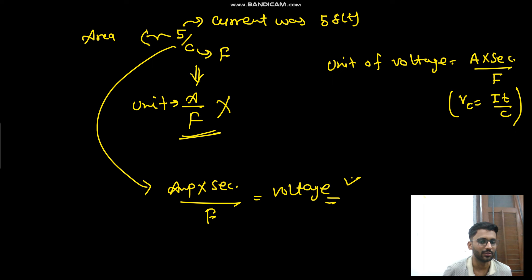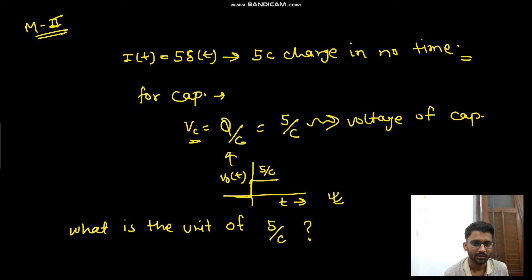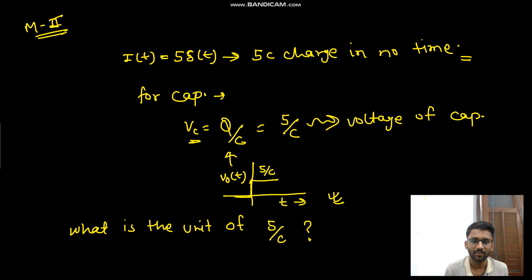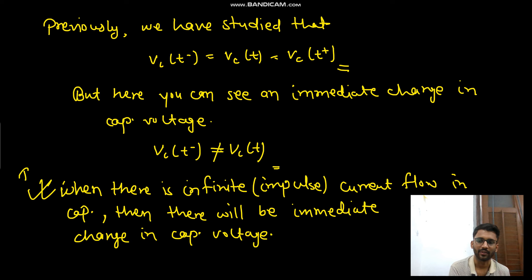So that's how there is an impulse change in capacitor voltage because of the infinite current source. The most important point to remember: when there is an impulse current source, there will be an immediate change in capacitor voltage. When there is infinite current flow in the capacitor, there will be an immediate change in capacitor voltage. Thank you.